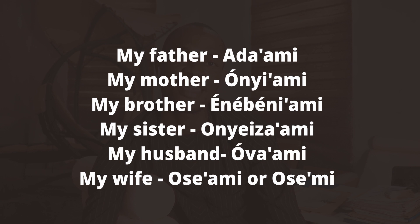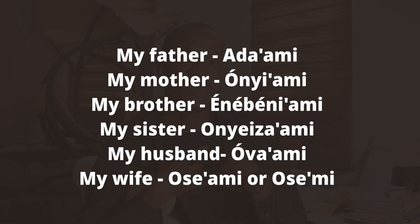My mother: 'onyami.' My brother: 'enebenami.' My sister: 'onezami.' My husband: 'ovami.' My wife: 'osemi.' So from this you understand that '-ami' at the end, like a suffix, shows possession — 'mine.' My husband is 'ovami,' my father is 'adami,' my mother is 'onyami.'